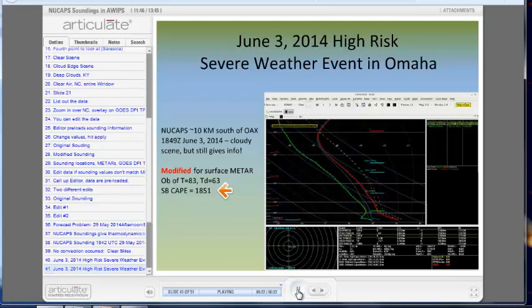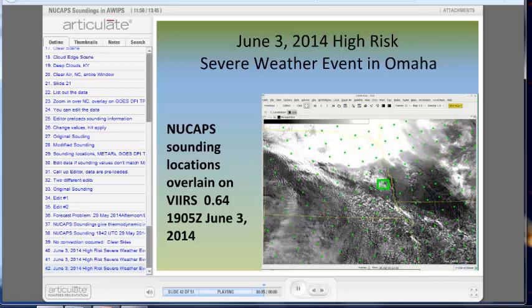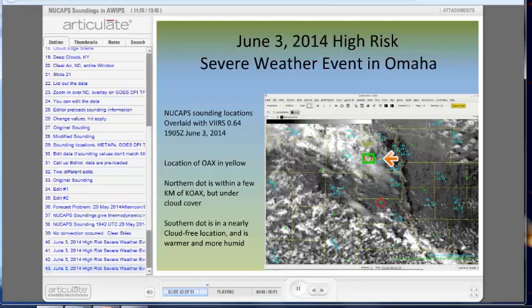So here's a zoomed-out view of where that NuCAP sounding is, the one that is boxed in green. Zooming in again, we see the sounding from the cloudy region boxed in green, and also a second-sounding location to the south, where skies are clearer. Dew points are warmer there, too.